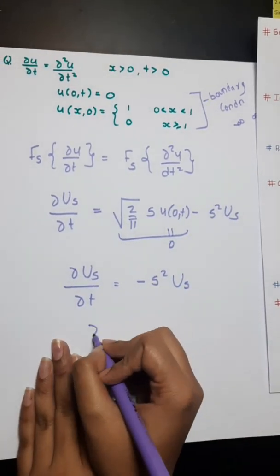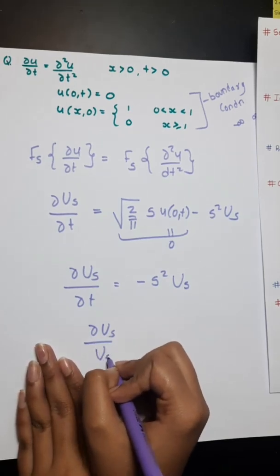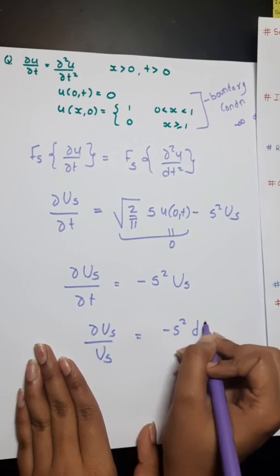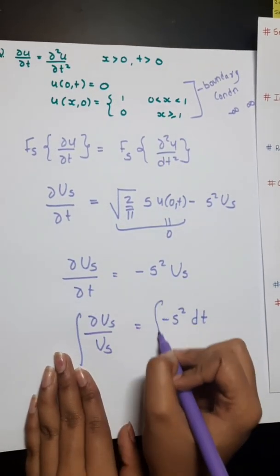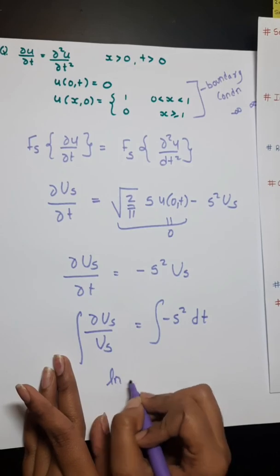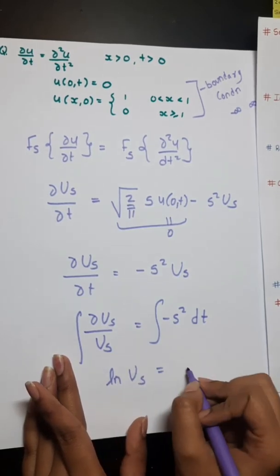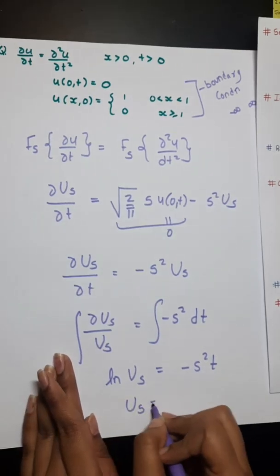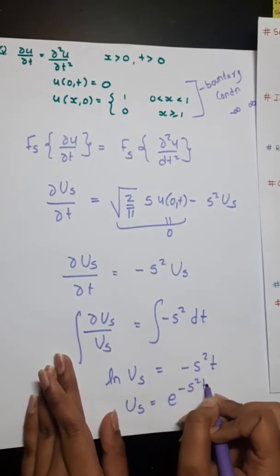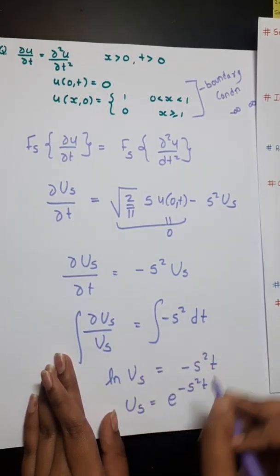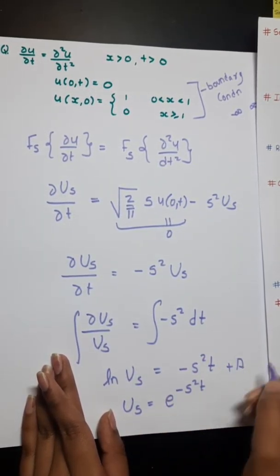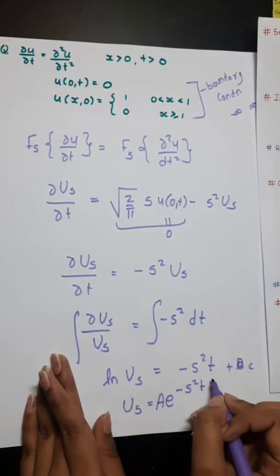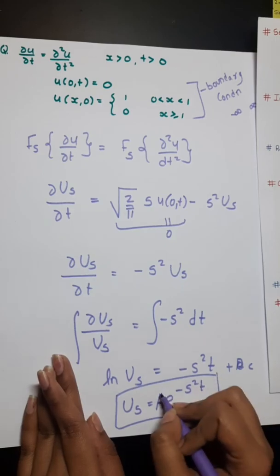Now we would be integrating it. We get ln(Ũs) = −s² · t. So Ũs = e^(−s²t). While integrating, we get a constant — let's call it A. So our expression becomes Ũs = A · e^(−s²t), and our main aim now is to find A.